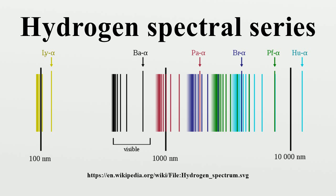The Paschen series is named after the German physicist Friedrich Paschen, who first observed them in 1908. The Paschen lines all lie in the infrared band. This series overlaps with the next series — the shortest line in the Brackett series has a wavelength that falls among the Paschen series.